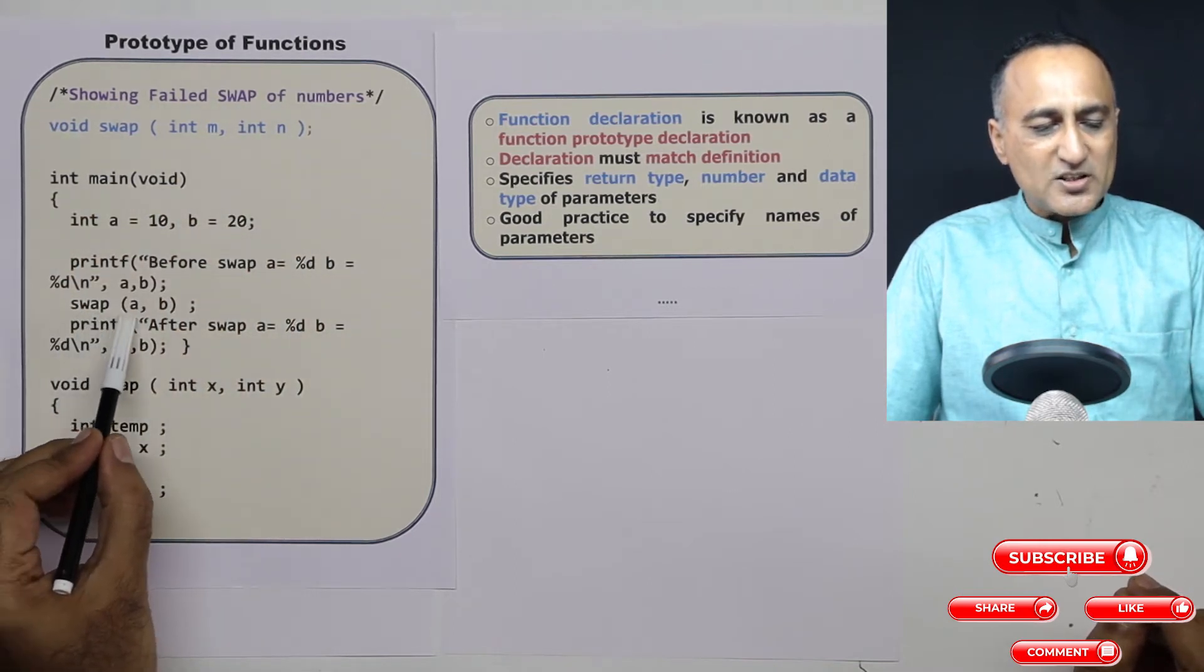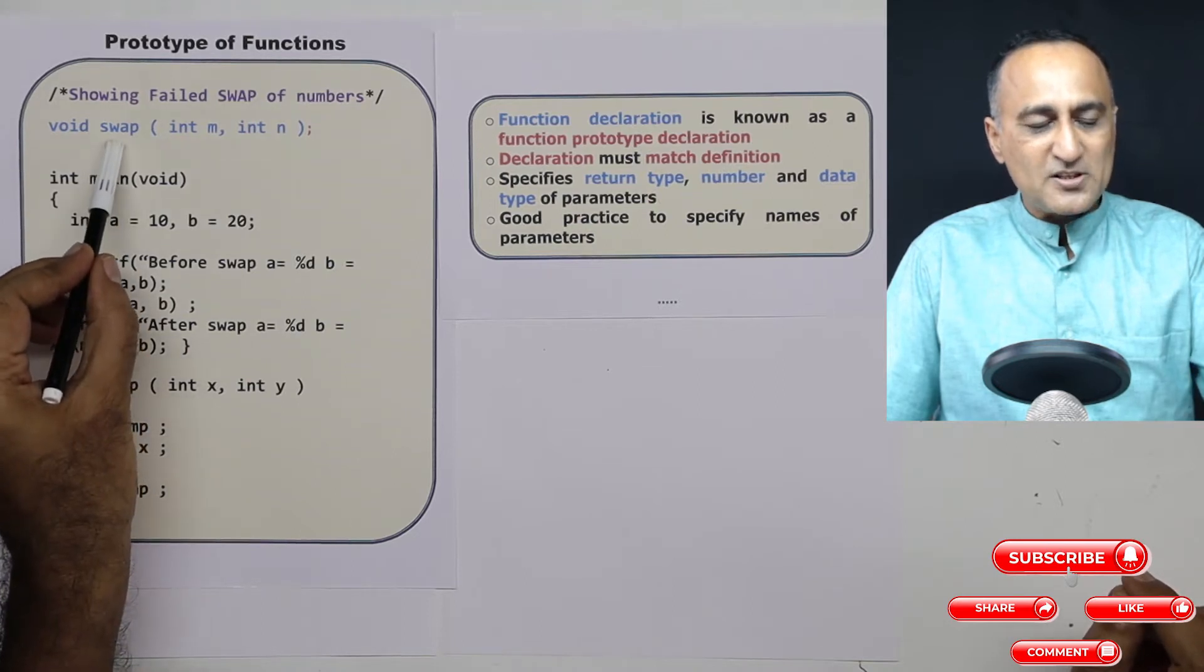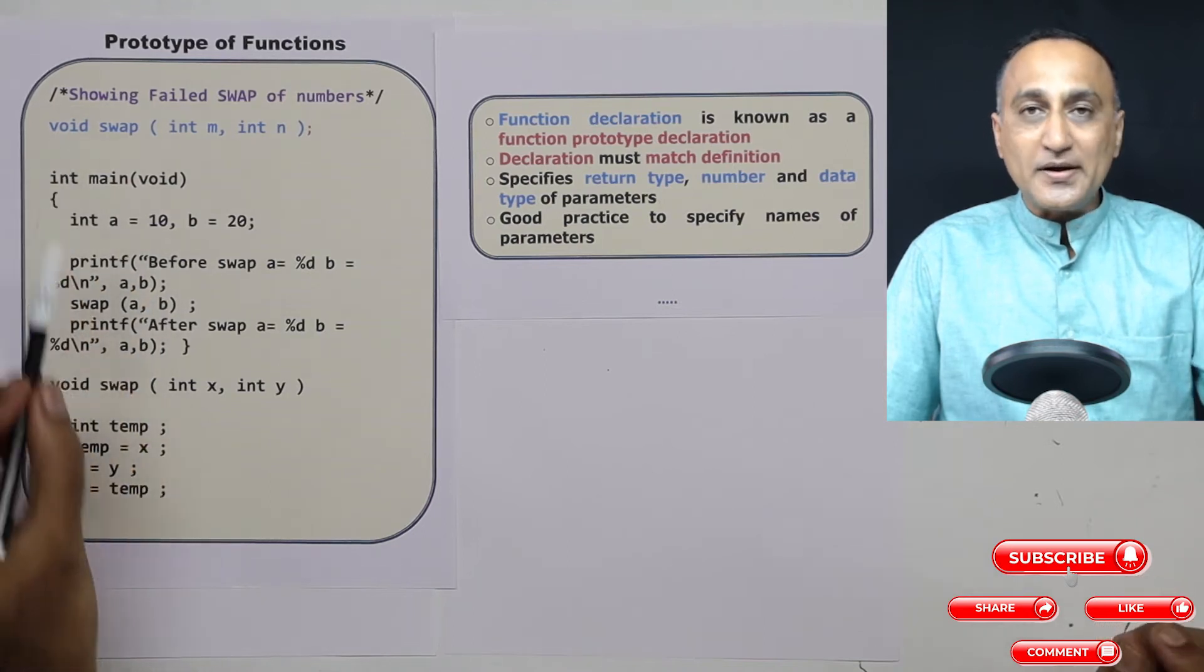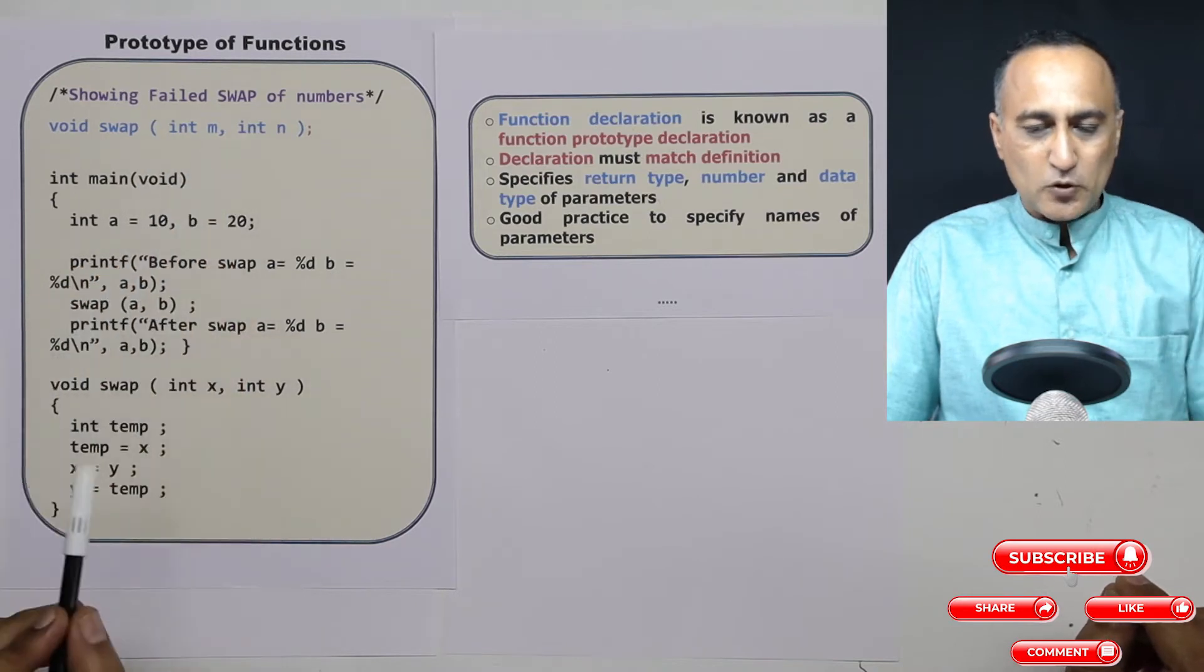So when it encounters a swap here, it is not surprised because it knows that swap is a function which is going to accept two parameters and it is not going to return anything. So this is the declaration of a function prototype.